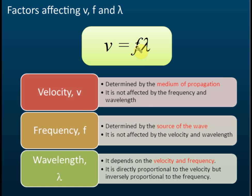Frequency is only affected by the source of the wave. For example, a piano can produce sound with different frequencies — do, re, mi, fa, so. The frequency depends on which key you strike. If you strike 'do,' the frequency is always 'do.' You cannot say you strike 'do' but change the speed and it becomes 're' — that's not possible. The frequency is always determined by the source only.